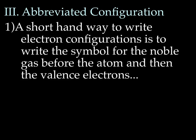Abbreviated configuration. So abbreviated configuration is kind of nice. It's a shorthand way to write electron configurations. What you do is you write the symbol for the noble gas just before the atom, and then you just write the valence electrons. So you don't have to write 1s2, 2s2, 2p6, 3s2, 3p6, 4s2, 4p6, and so forth.